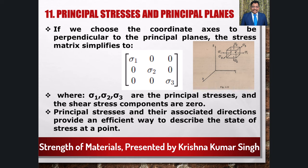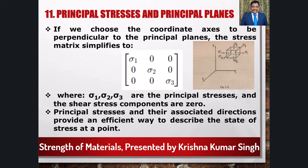If we take the coordinate axes along the three principal planes, then the stress matrix can be written in diagonal form as [sigma_1, 0, 0; 0, sigma_2, 0; 0, 0, sigma_3] where sigma_1, sigma_2, sigma_3 are the principal stresses. We observe that principal planes are those on which shear stress components are zero. Principal stresses and their directions provide a convenient way to describe the state of stress at any point.